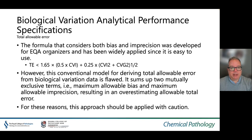Biological variation can also be used to set a total allowable error budget. This formula considers both bias and imprecision and was developed for EQA organisers and is easy to use. However, this conventional model for deriving total allowable error from biological variation is flawed as it sums up two mutually exclusive terms — maximum allowable bias and maximum allowable imprecision — resulting in an overestimation of allowable total error. For these reasons, this approach should be applied with caution.